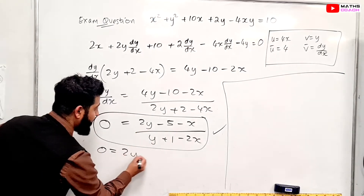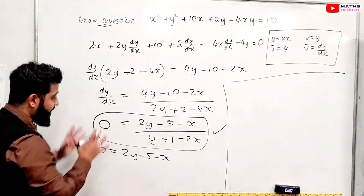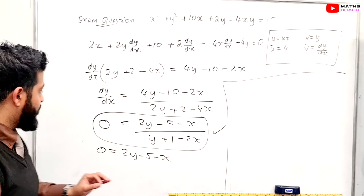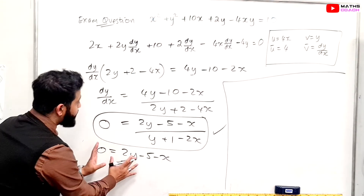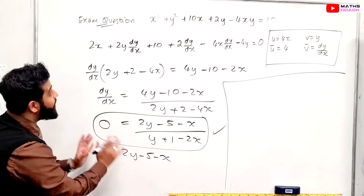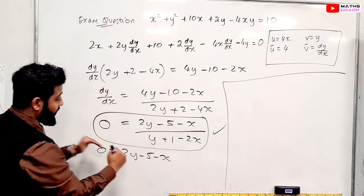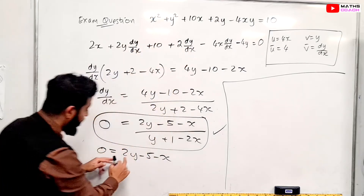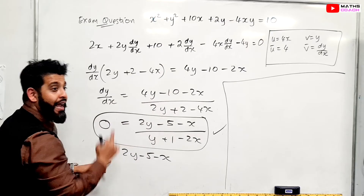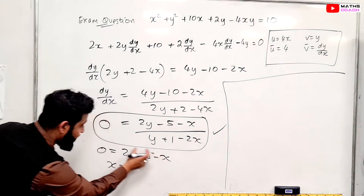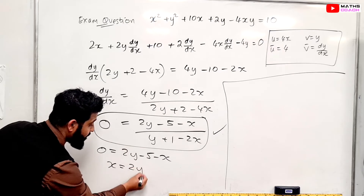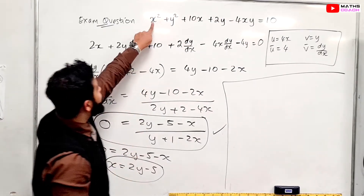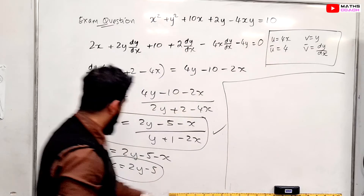So we get 0 equals 2y - 5 - x. The question asks for values of y, so I'll go back to the original equation and substitute. I need to make x the subject here: x equals 2y - 5. I'll take this value of x and substitute it wherever I see x in the original equation.